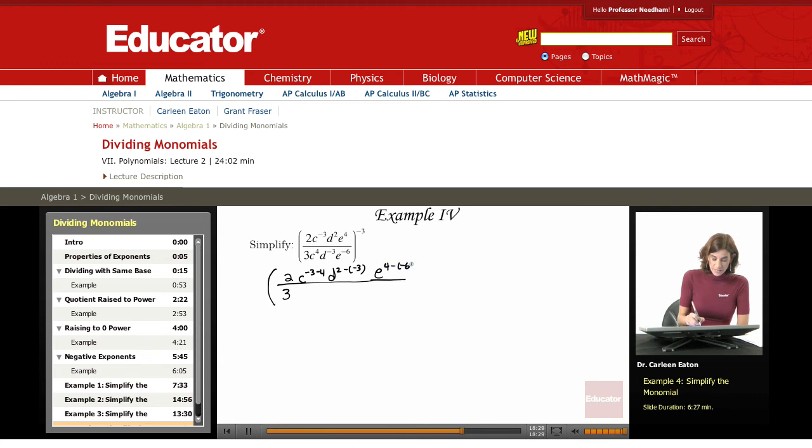All of this is raised to the negative third power. Then I'm just going to do my subtraction. Minus three minus four, C to the negative seven. Here I have two minus negative three, so that three becomes positive. I have two plus three, D to the fifth.